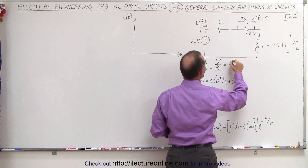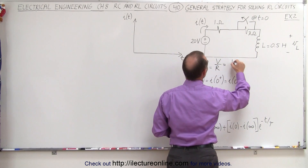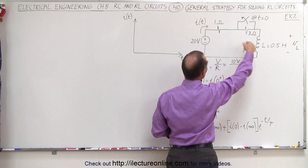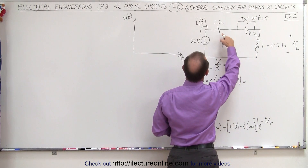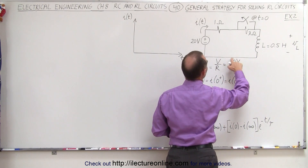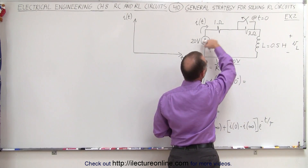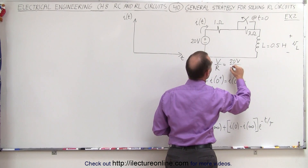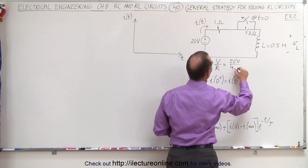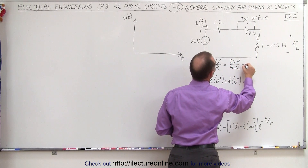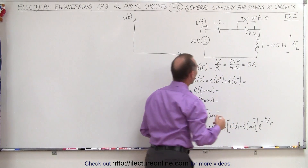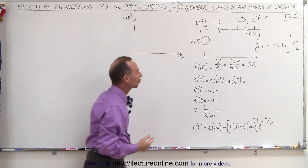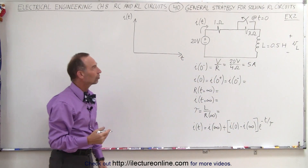In this case, that would be the voltage — 20 volts divided by the total resistance of 4 ohms, which is equal to 5 amps. So that is our initial current through the circuit.